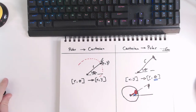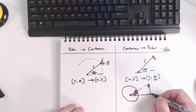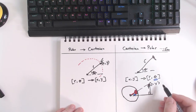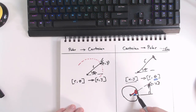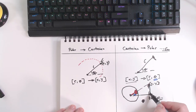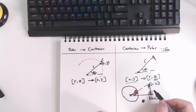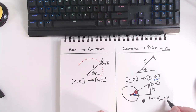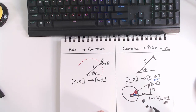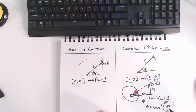How can we figure out theta? Imagine a right triangle. From the mouse cursor at known X and Y coordinates, we need to find theta. The tangent of theta equals the opposite leg — dy — over the adjacent leg — dx. Therefore, theta is the arctangent, or inverse tangent, of dy over dx.